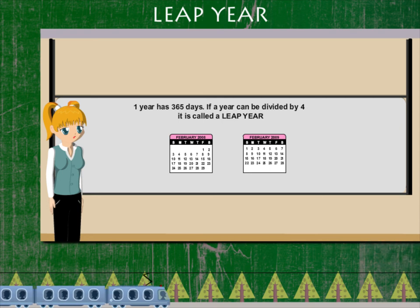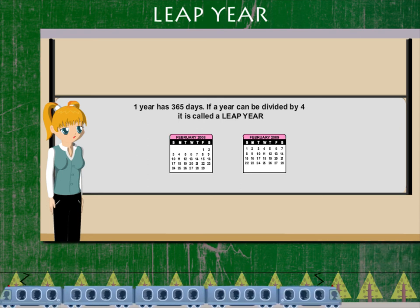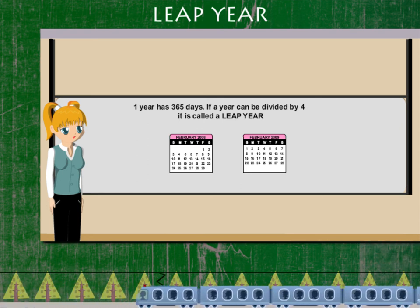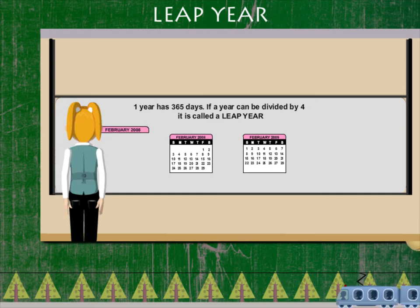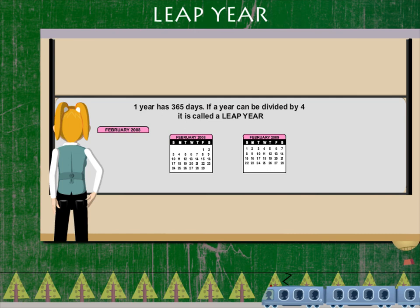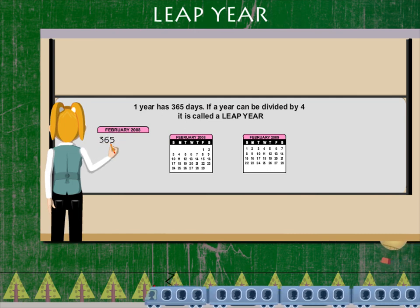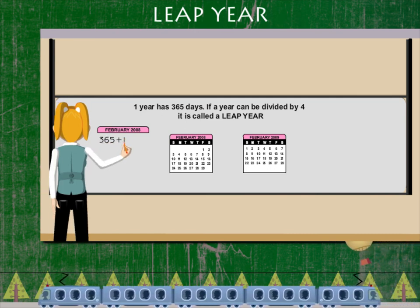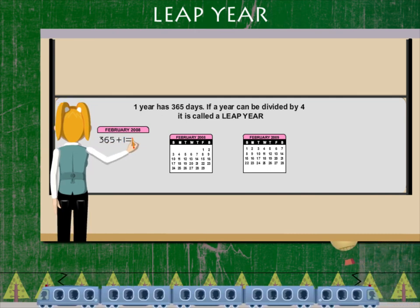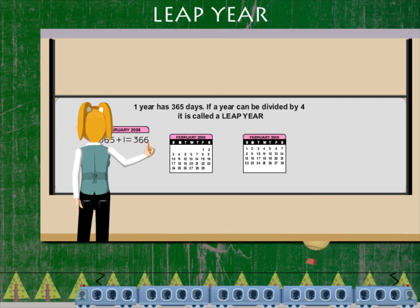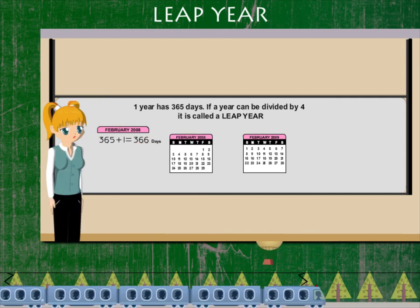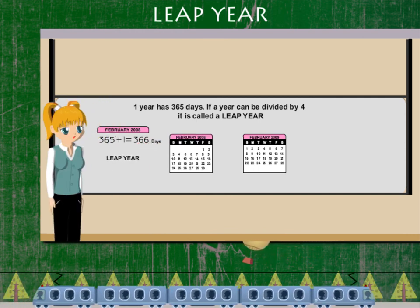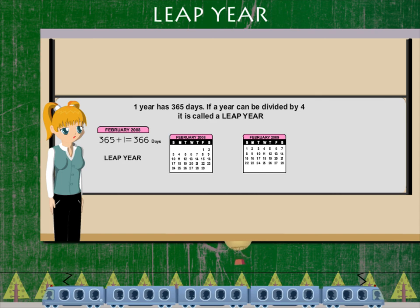The leap year has 29 days in February. Watch the calendar — February 2008 has 29 days. This means 365 plus 1 equals 366 days, and 2008 is a leap year.